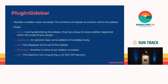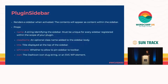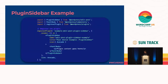PluginSidebar — I'm sure everyone in the room has seen this. This renders a sidebar when activated. In the top right-hand corner by the publish buttons is where you'd see this. The contents of this fill show up inside the sidebar when you click the button. It needs a name as an identifier, a class name, a title displayed at the top of the sidebar, an isPinnable boolean for whether it can be pinned, and an icon.